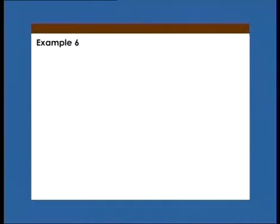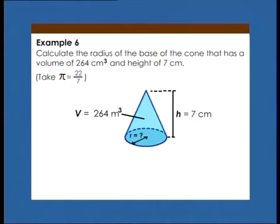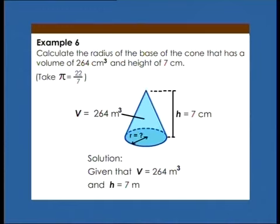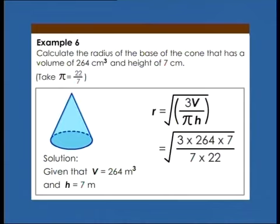Example 6: Calculate the radius of the base of a cone that has a volume of 264 cubic centimeters and a height of 7 centimeters. Take π = 22/7. Solution: Given V = 264 cm³ and H = 7 cm. R = √(3V/(πH)) = √((3 × 264 × 7)/(7 × 22)) = 6 centimeters.